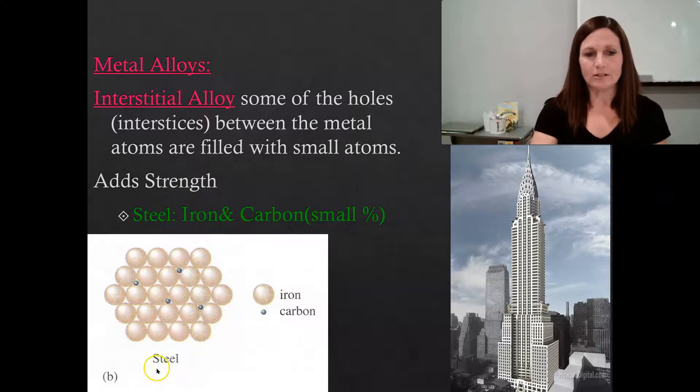So this is steel. In gold, we see the iron atoms and we see that they're quite large. And then we fill these interstices with these tiny carbon atoms.